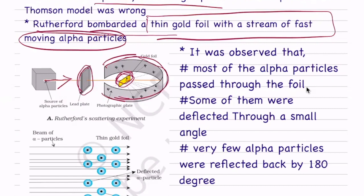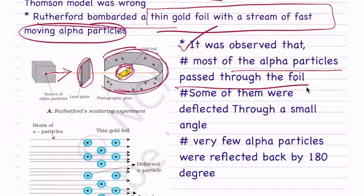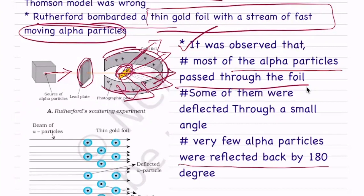When the alpha particles hit the gold foil, they are scattered. First observation: it was found that most of the alpha particles passed straight through the foil. Second observation: some of them were deflected through a small angle. Third observation: very few alpha particles were reflected back by 180 degrees — they were returned back completely.